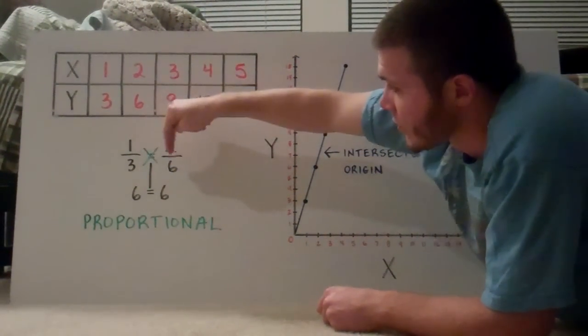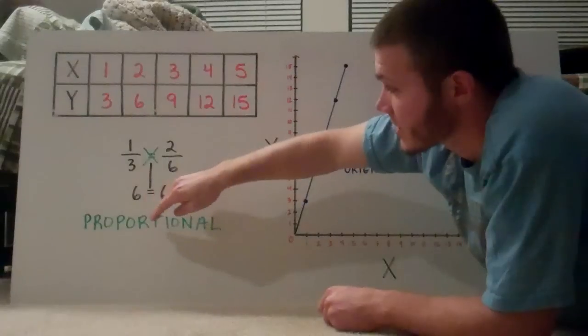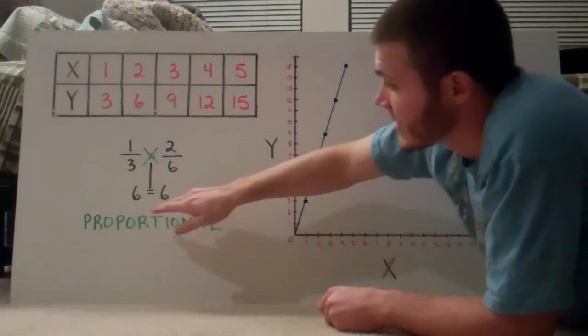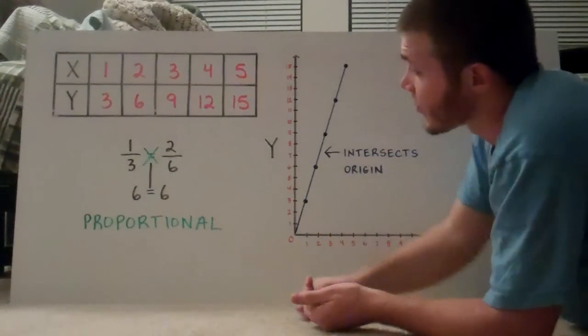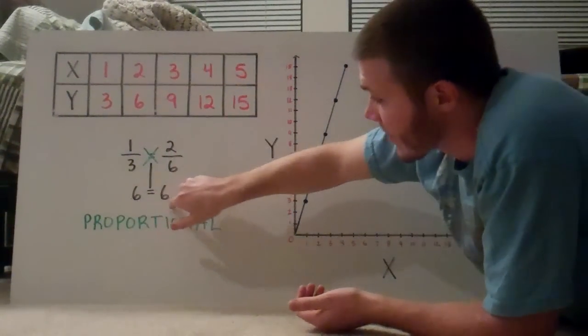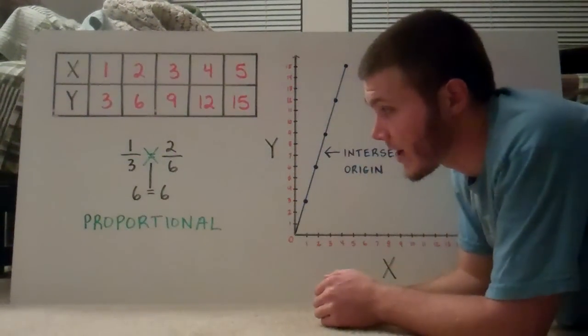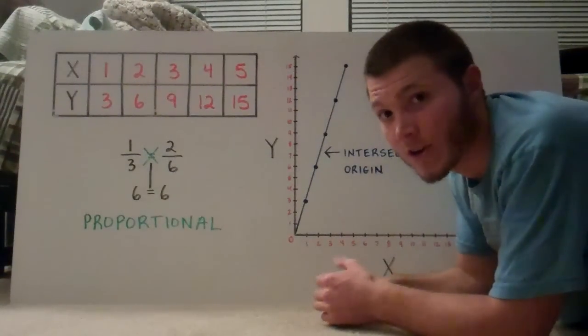When we cross multiply, 1 times 6 is 6, 3 times 2 is 6. Is 6 equal to 6? Yeah it is. So when you cross multiply and you get the same values, that must mean that those ratios are proportional.